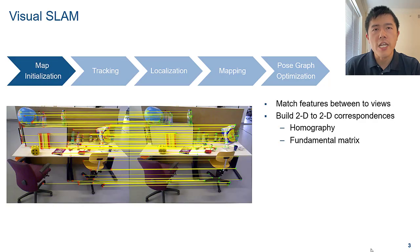You start with map initialization. After extracting features from two consecutive image frames, you can match the features and then compute the relative pose of the camera.